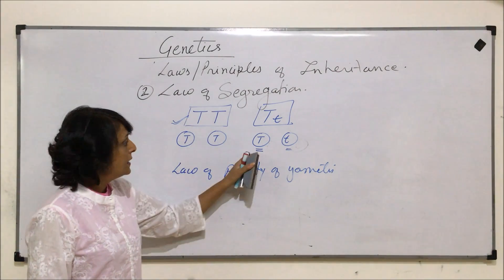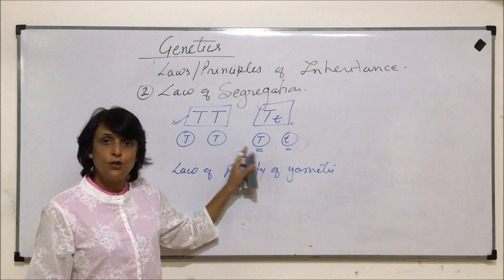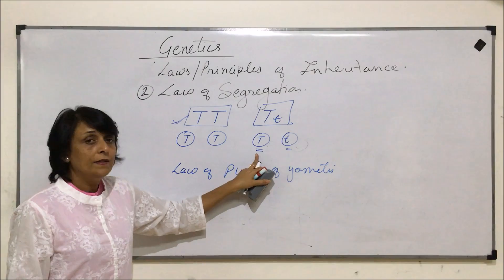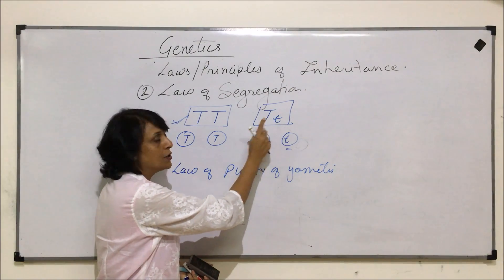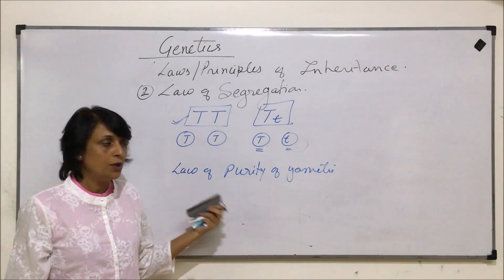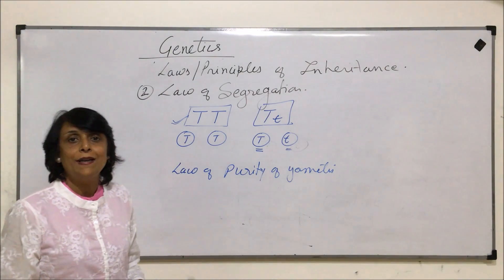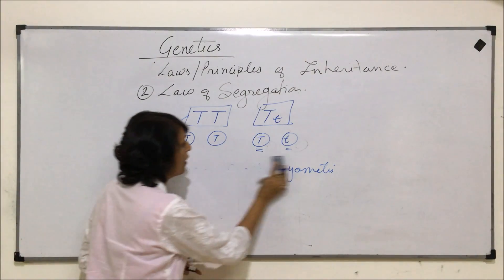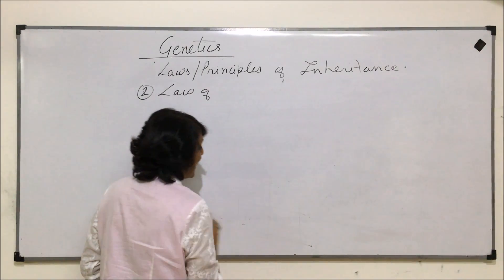The law of segregation states that gametes receive only one allele out of two, since the two alleles get segregated during gamete formation. Because each gamete has only one allele, there is no heterozygous condition in the gamete. That is why the law of segregation is also known as the law of purity of gametes. The third law can be understood if we understand the dihybrid cross.